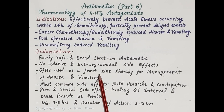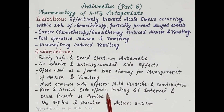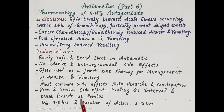The most common side effects of ondansetron are mild headache and constipation. A rare and serious side effect of ondansetron is prolongation of the QT interval, which can cause torsades de pointes. The half-life of ondansetron is 3 to 5 hours, while its duration of action is 8 to 12 hours.